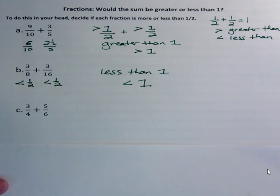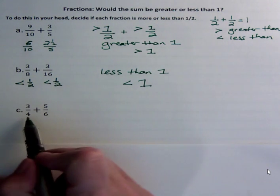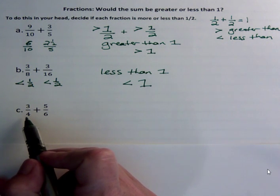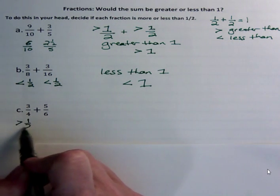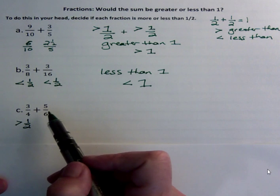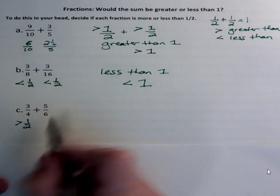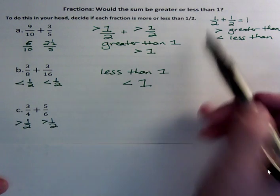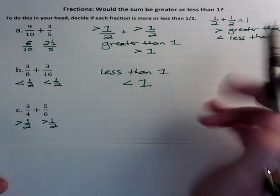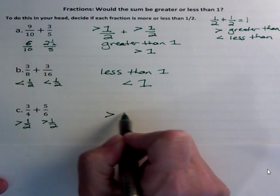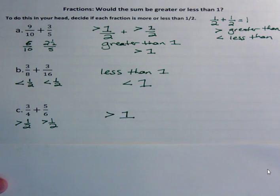All right, what about this one? Three-fourths and five-sixths. Is this greater than one-half or less than one-half? Half of four would be two, and we have three, so that's greater than one-half. What about five-sixths? Well, half of six would be three. We have five, so that's also greater than one-half. So I have more than one-half in my first part, and I have more than one-half in my second part, so I'm going to have more than one or greater than one for my sum of those two parts.